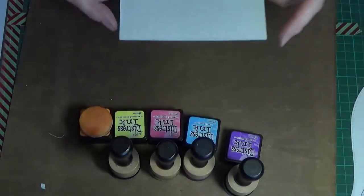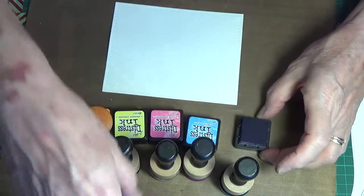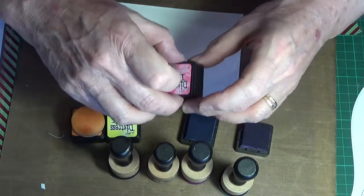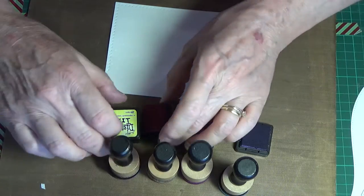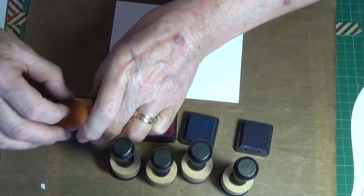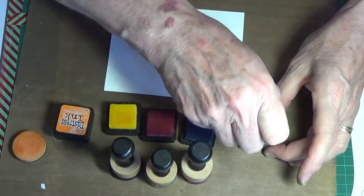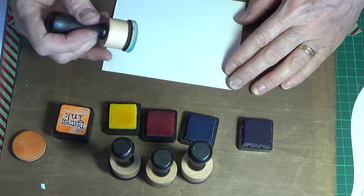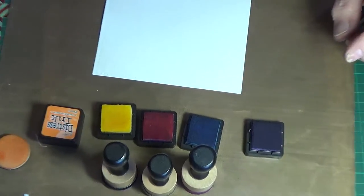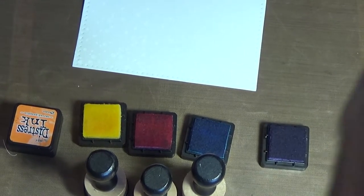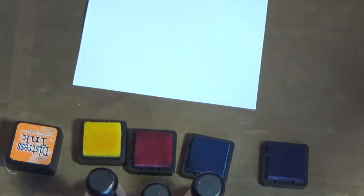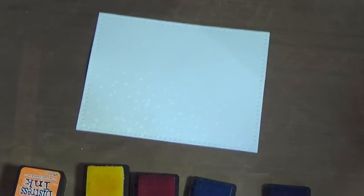I've already stamped and embossed with white Stampendous superfine embossing powder. The inks I'm using are Distress Inks: Wilted Violet, Broken China, Picked Raspberry, Squeezed Lemonade, Carved Pumpkin, and later I'll bring in Chipped Sapphire and Black Soot.